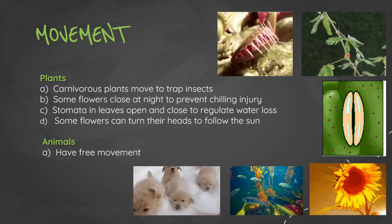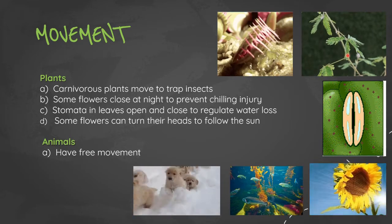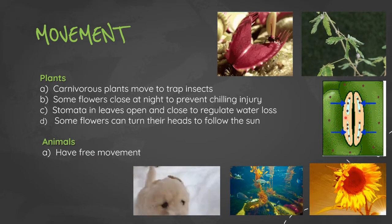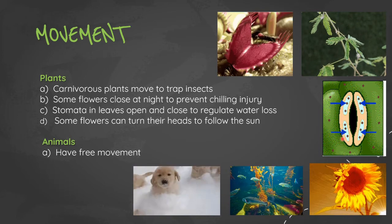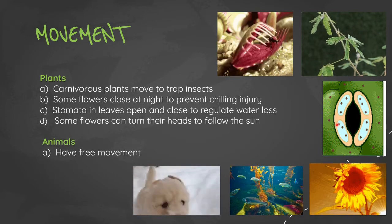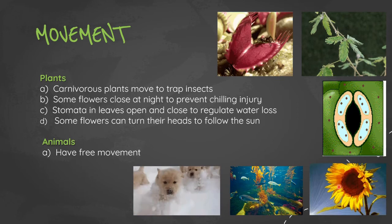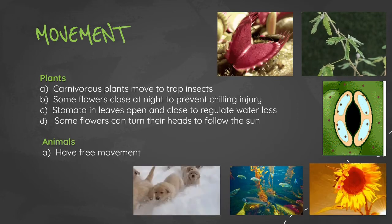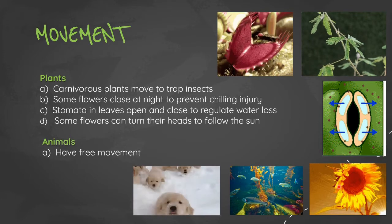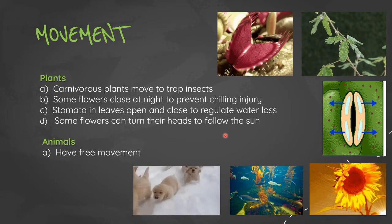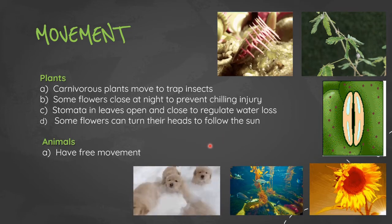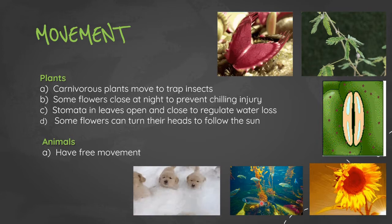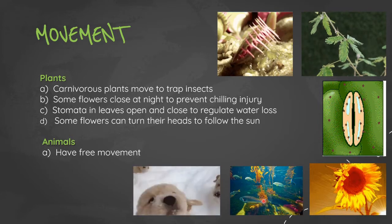Stomata in leaves open and close to regulate water loss. Some flowers can actually turn their heads to follow the sun, which allows for efficient photosynthesis. Animals have free movement, as you can see of these cute puppies running in the snow and these fishes swimming about in the tank.